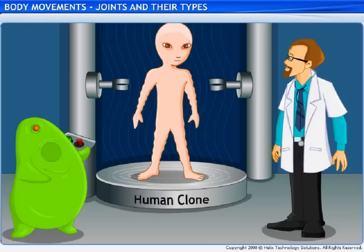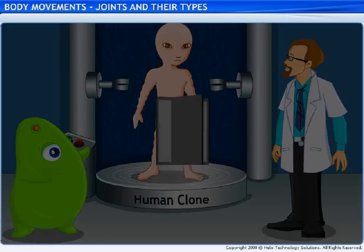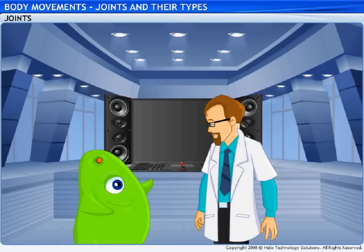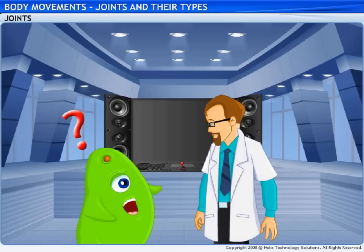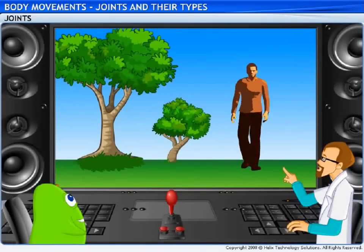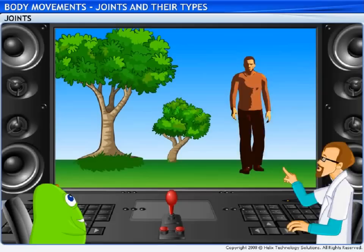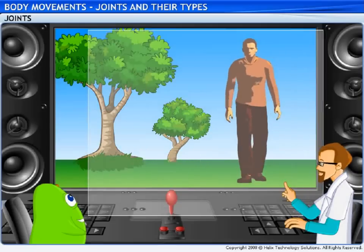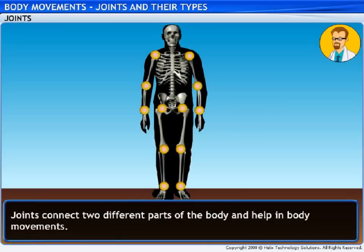It looks like our alien needs to understand the importance of joints and the role they play in movement. Welcome to the lesson on joints and their types. Joints — what's that? Look here. See the people walking. Human beings can walk and move different parts of their body because of joints. Joints connect two different parts of the body and enable body movements.